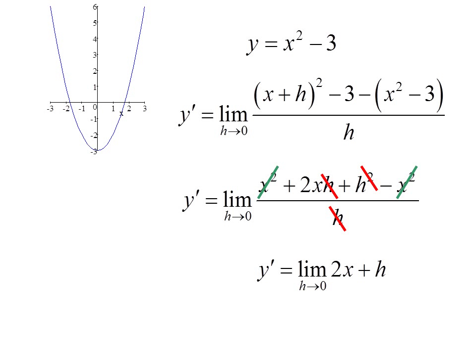So now we have y prime equals the limit as h goes to zero of 2x plus h. And as h goes to zero, what's left is 2x. So now we have a general expression for the derivative, that is a general expression for the slope of the original function at any point.